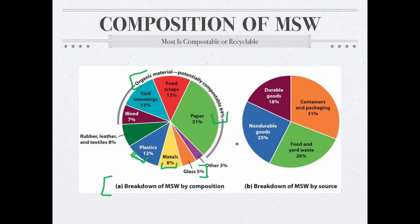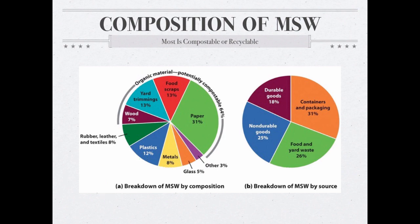If you look at the waste stream by source, non-durable goods — things not meant to last long, like paper products — make up a significant share. Durable goods, at 18%, are things meant to last, like mixers and phones. The largest source of our waste stream is containers and packaging, making up 30%, so that's obviously a place we could reduce some waste. Food and yard waste accounts for 26% and would be compostable. Make sure you are able to discuss the waste stream by composition and the waste stream by source.